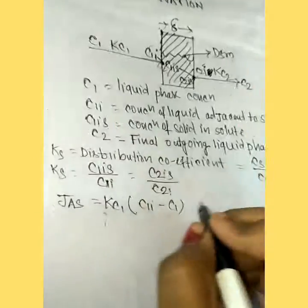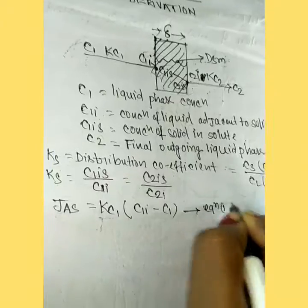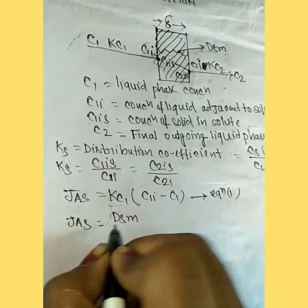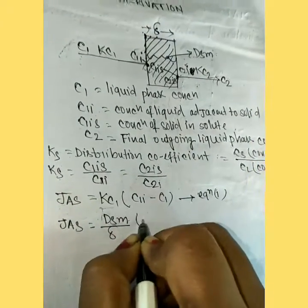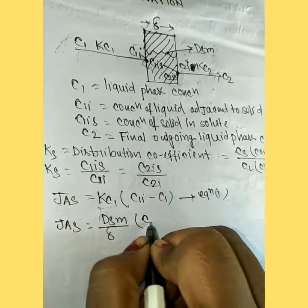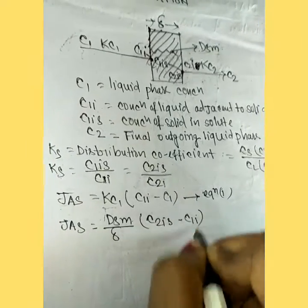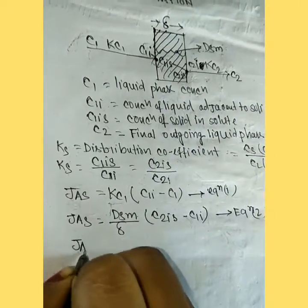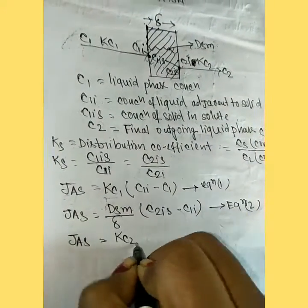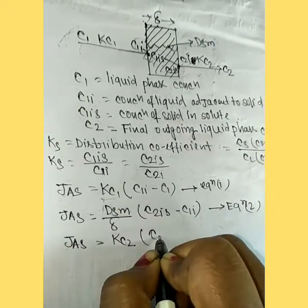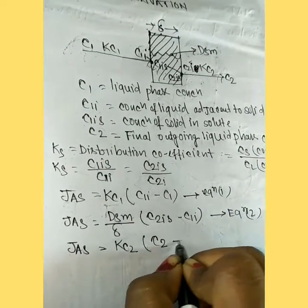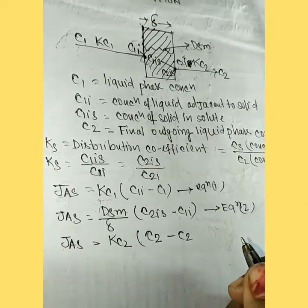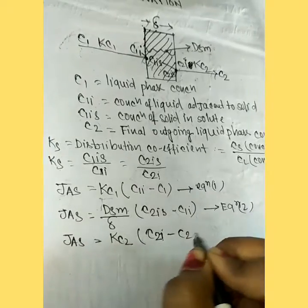Equation 1: JΔs = Kc1(C1 - C1I). Equation 2: JΔs = (Dsm/δ)(C2IS - C1IS). Equation 3: JΔs = Kc2(C2I - C2).